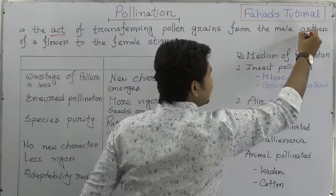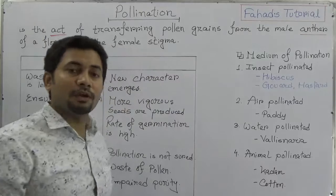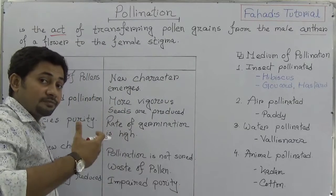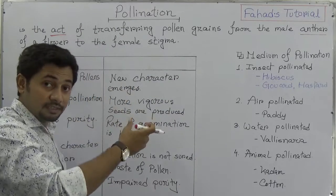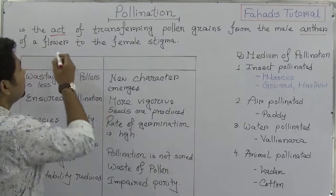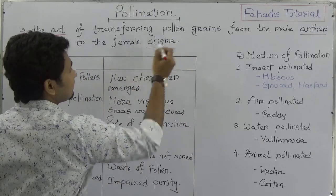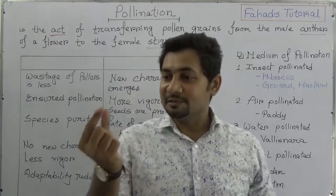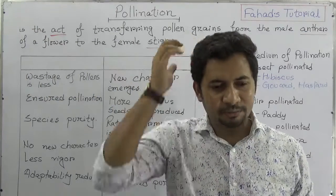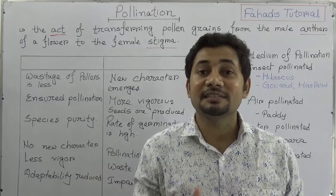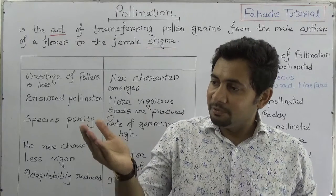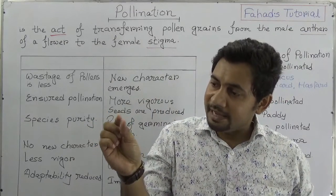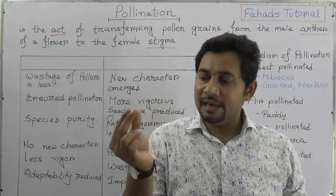I hope you know the structure of a flower. Pollination is an act of transferring pollen grains from the male anther to the female stigma. Pollen grains are part of sexual reproduction and part of flowers. Pollen grains transfer from the anther to the stigma.